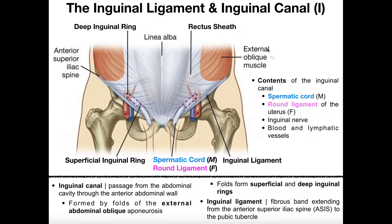The superficial one is the external oblique, but deep to that we have the internal oblique and the transverse abdominis. All three of those muscles have an aponeurosis, so all this white fibrous tissue is really just a fusion of those three aponeuroses.